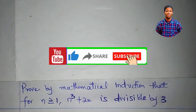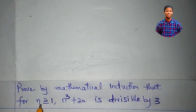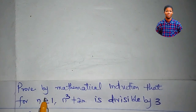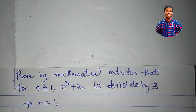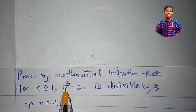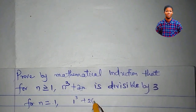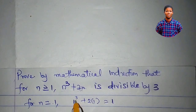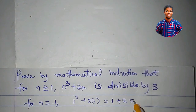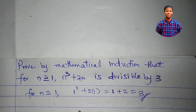Now I want to prove by mathematical induction that for n greater than or equal to 1, n cubed plus 2n is divisible by 3. The condition says n is greater than or equal to 1, so we have to show it is true for n equal to 1. Plugging in 1: 1 cubed plus 2 times 1 equals 1 plus 2 equals 3, and 3 is divisible by 3. So it is true for n equal to 1.